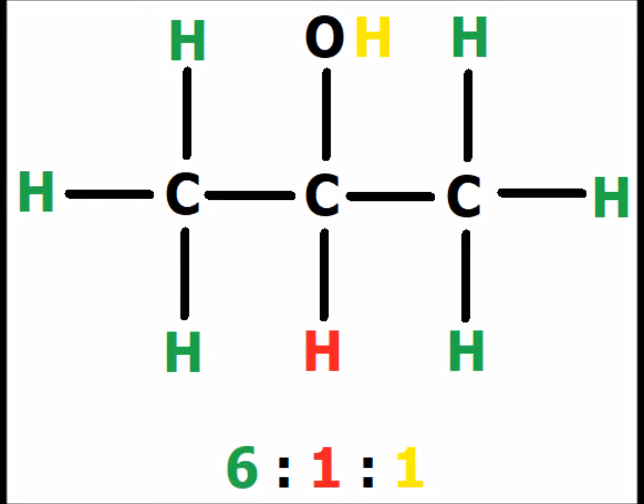In 2-propanol (isopropanol), we have three distinct hydrogen resonances. One is the hydroxyl hydrogen shown in yellow, which you would see as a singlet because of exchange. We would see the red hydrogen directly attached to the alpha carbon, shifted downfield because of the very electronegative oxygen. Then we have six methyl hydrogens which are symmetrically equivalent because the left side is the mirror image of the right side. We end up with ratios of 6 to 1 to 1.